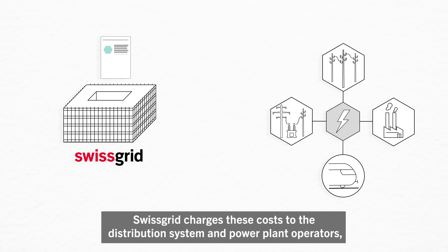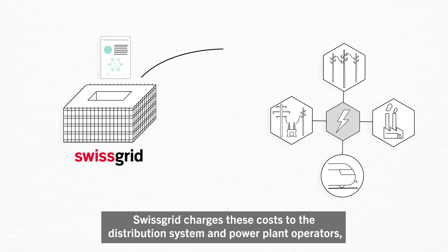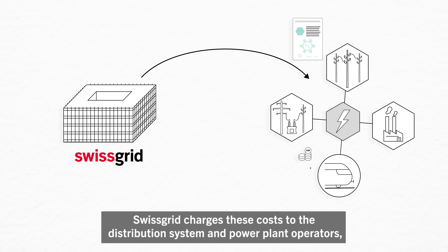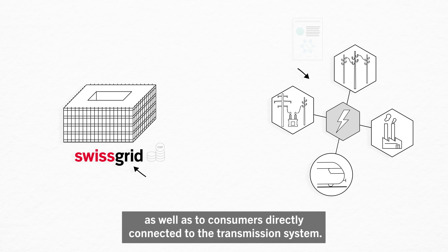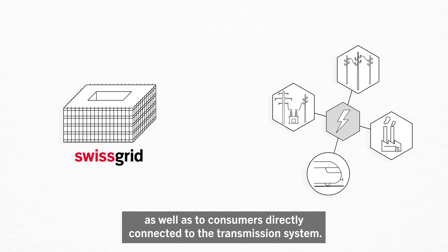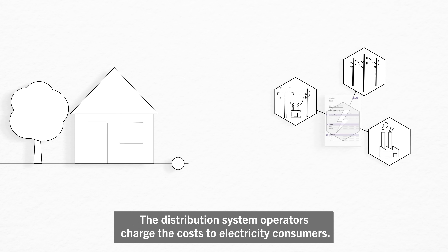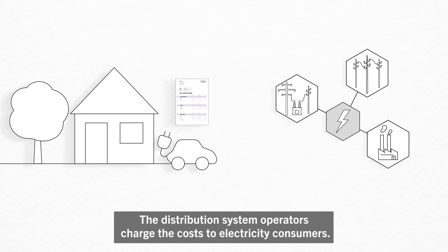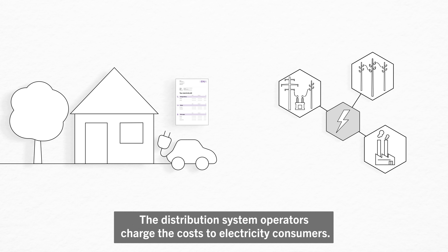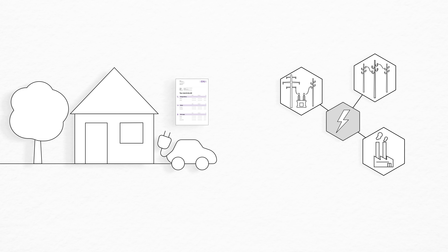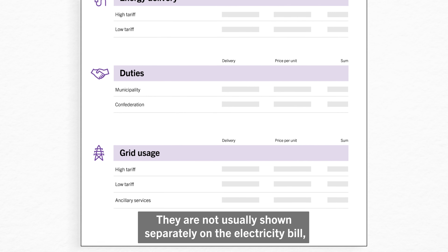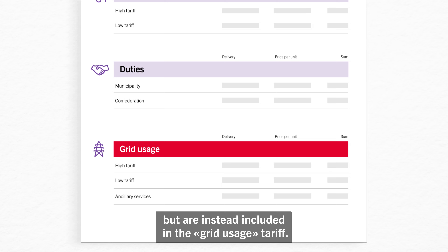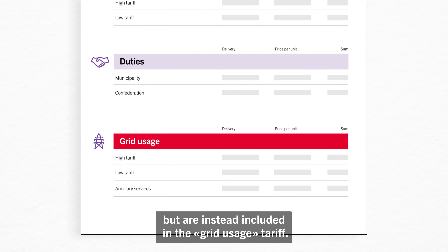Swiss Grid charges these costs to the distribution system and power plant operators, as well as to consumers directly connected to the transmission system. The distribution system operators charge the costs to electricity consumers. They are not usually shown separately on the electricity bill, but are instead included in the grid usage tariff.